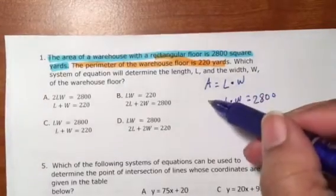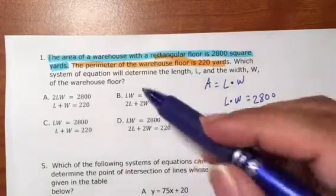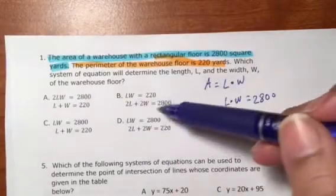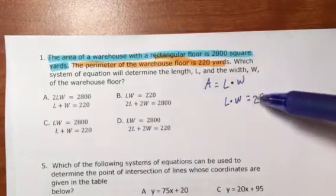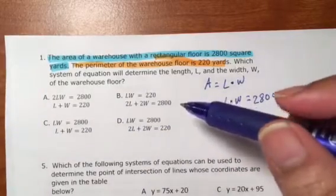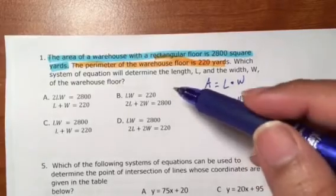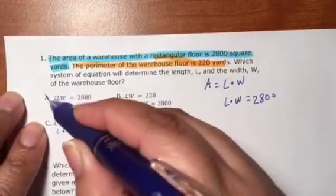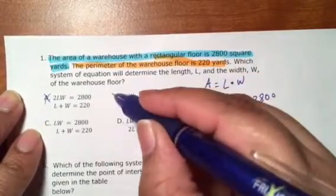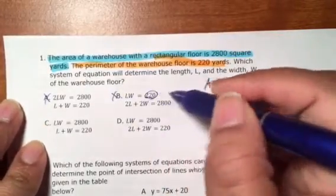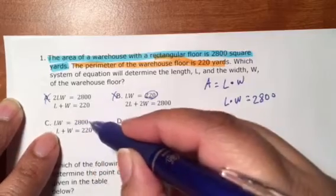It's okay if you would have had the area over here. I just made it look like this where the 2800 is last. So if you look, that means this one's out, that one's out because of the number. This one could work and that one could work.